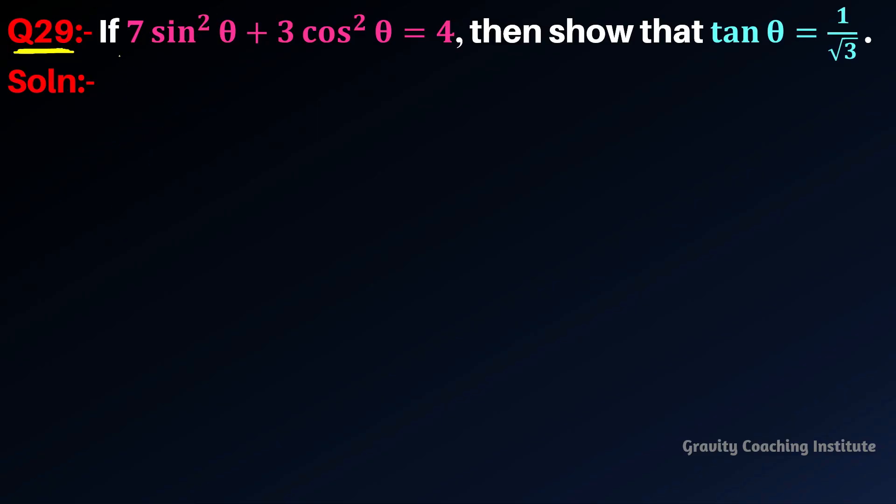Question number 29: If 7 sin²θ + 3 cos²θ = 4, then show that tan θ = 1/√3. In this question, the equation given is 7 sin²θ + 3 cos²θ = 4.